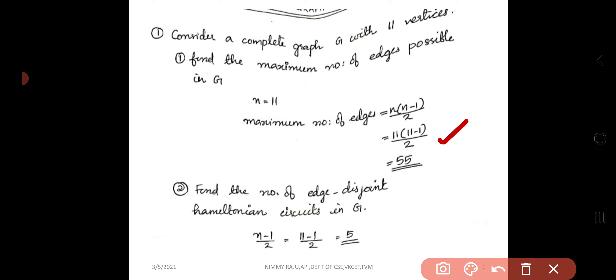Second question is, find the number of edge disjoint Hamiltonian circuits possible in G. The equation used for finding the number of edge disjoint Hamiltonian circuits is n minus 1 by 2. So the answer is 11 minus 1 by 2, that is equal to 5.